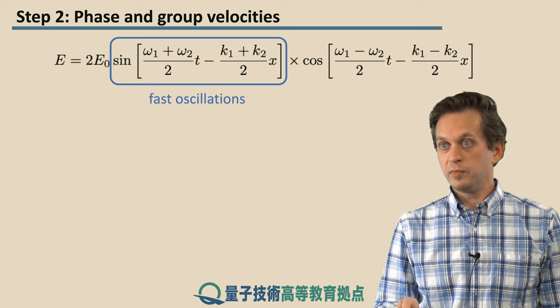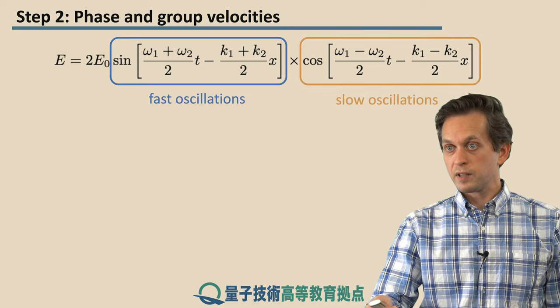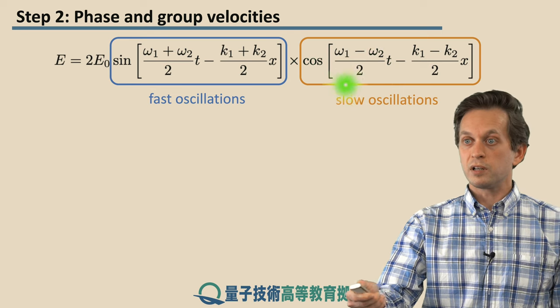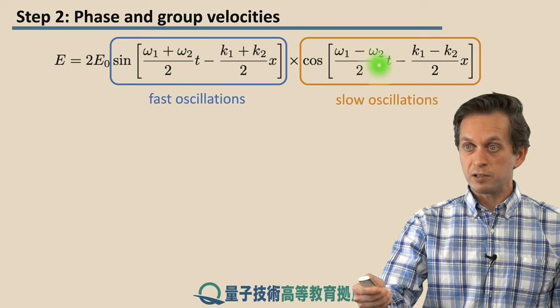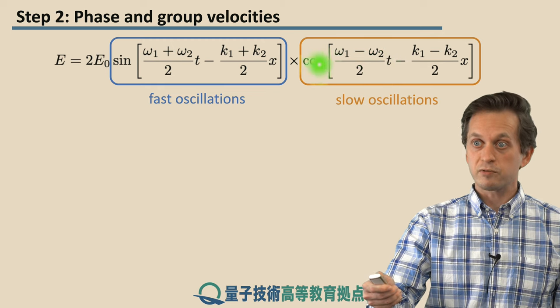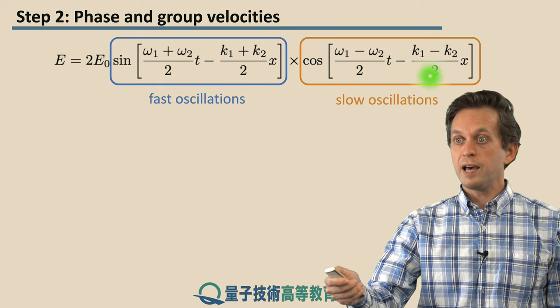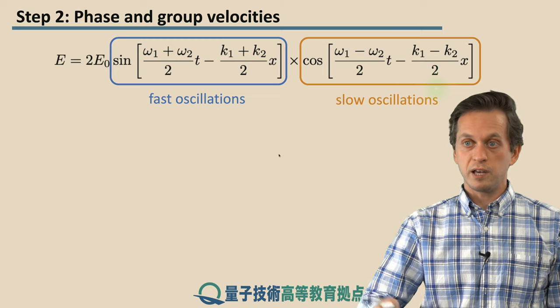Whereas the other term, the cosine term, we call that the slow oscillating term, because the new angular frequency is dependent on the difference between ω1 and ω2, and the difference between k1 and k2.